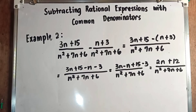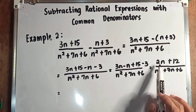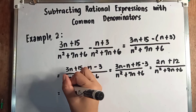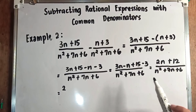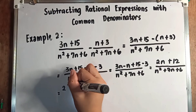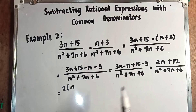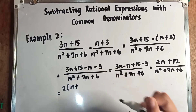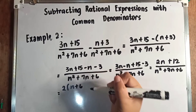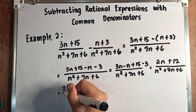We are not done yet — we still need to factor both numerator and denominator. For 2n plus 12, we use common monomial factoring. The GCF of 2n and 12 is 2, and there's no common variable. So 2n divided by 2 gives n, and 12 divided by 2 gives 6, making it 2 times (n plus 6).